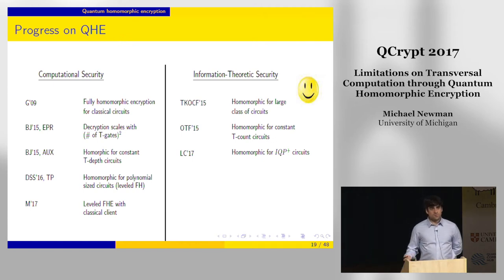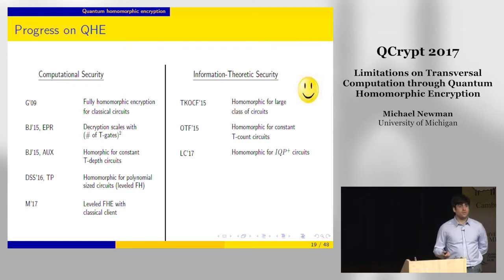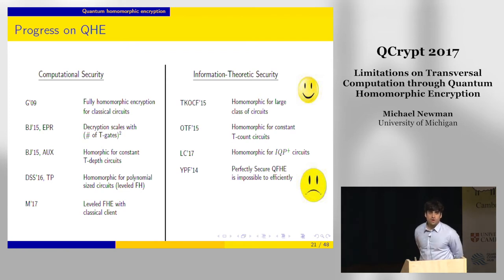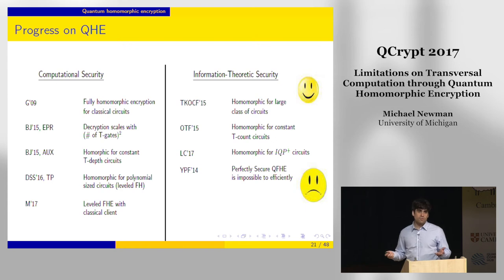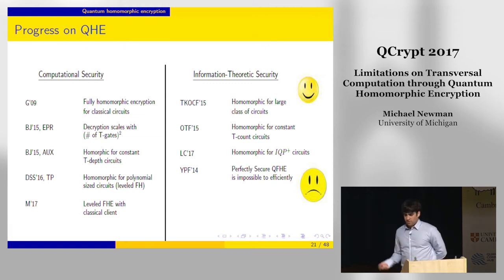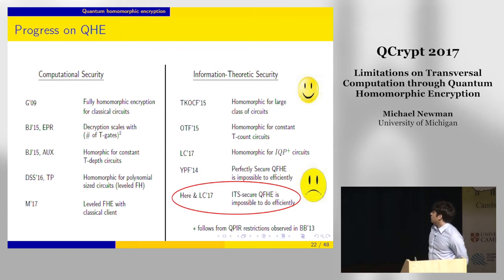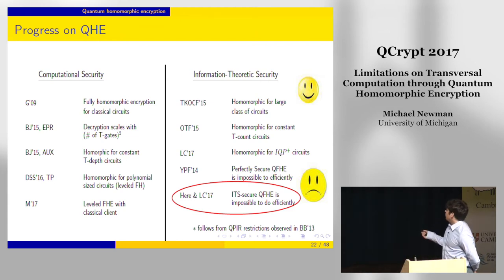We have intermediate progress towards information-theoretically secure homomorphic encryption. But is fully homomorphic encryption with information-theoretic security possible? Unfortunately, this seems not to be the case. There's a strong no-go theorem from 2014 by Yu, Perez-Delgado, and Fitzsimmons: if you demand perfect security—meaning the mutual information between ciphertext and plaintext is precisely zero—you can't do homomorphic encryption even with quantum assistance efficiently. Even with the epsilon relaxation seen in the OTF scheme, it turns out you still can't have efficient fully homomorphic encryption. This independently observed result essentially follows from private information retrieval bounds extended to the quantum setting in 2013.